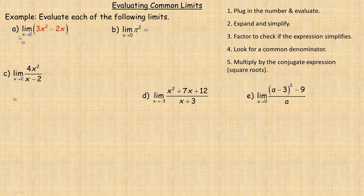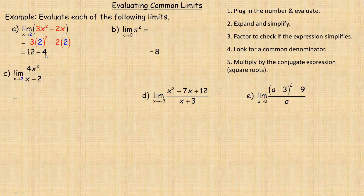Let's start with example a. We're asked to find the limit of 3x squared minus 2x as x tends towards 2. We can just substitute 2 in place of x. So 2 squared is 4, times 3 is 12, and 2 times 2 is 4. So 12 minus 4 is just 8. There's nothing beyond that necessary — we just evaluate by substituting the value that x is approaching.